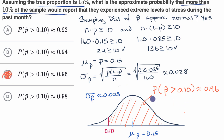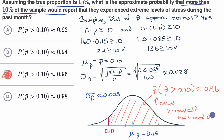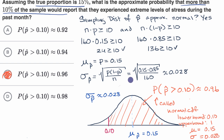If you're taking the AP exam, you should write out what you typed into the normal CDF function: lower bound 0.10, upper bound 1, mean 0.15, and standard deviation 0.028 — just so the graders know that you understood what you were doing. Hopefully this is helpful.